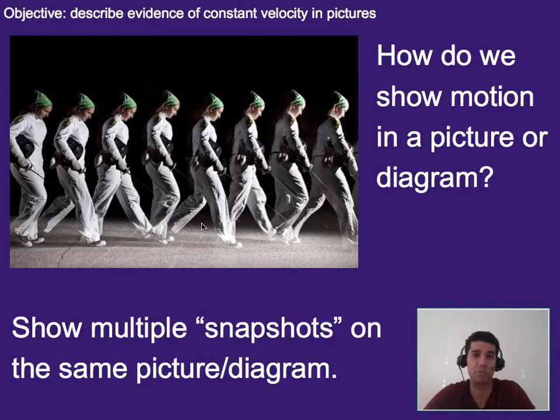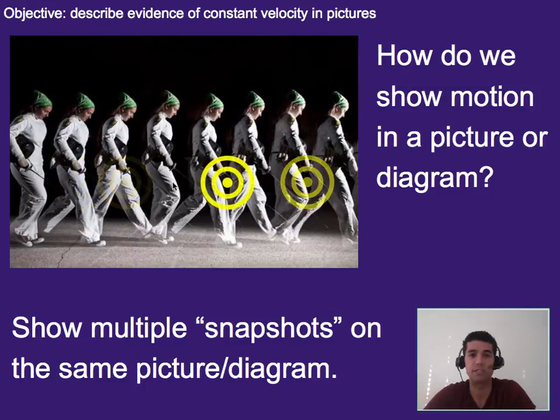In physics, that's how we're going to show motion in a picture or diagram: we show multiple snapshots on the same picture or diagram so we can see the position of that person or thing over time.